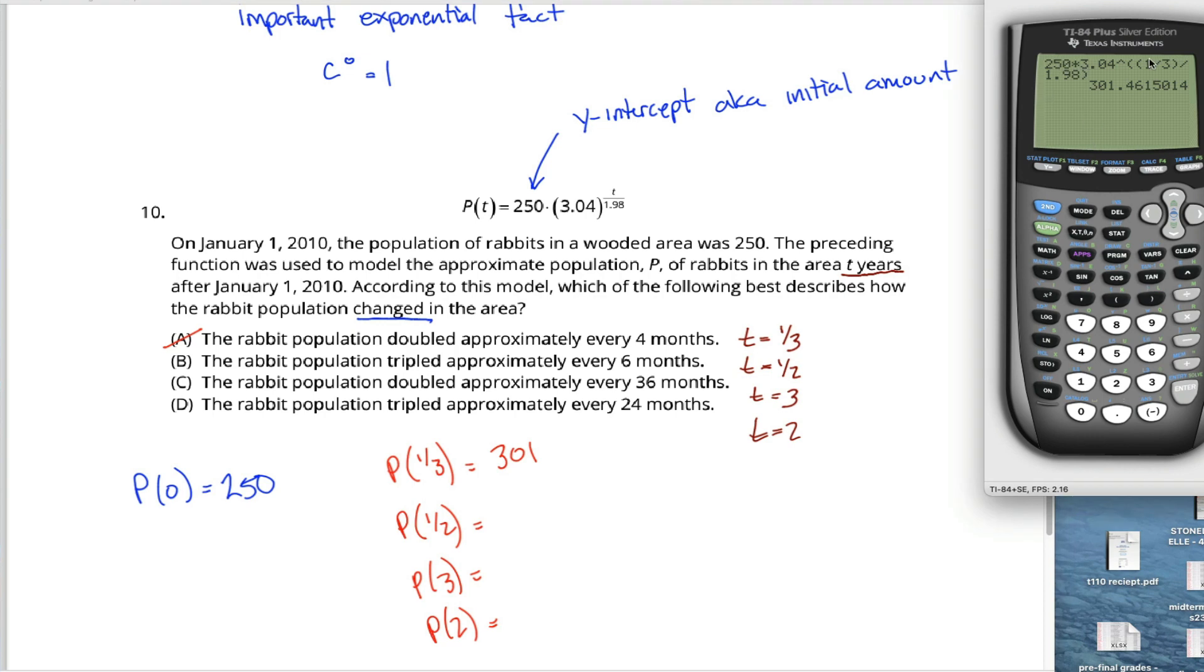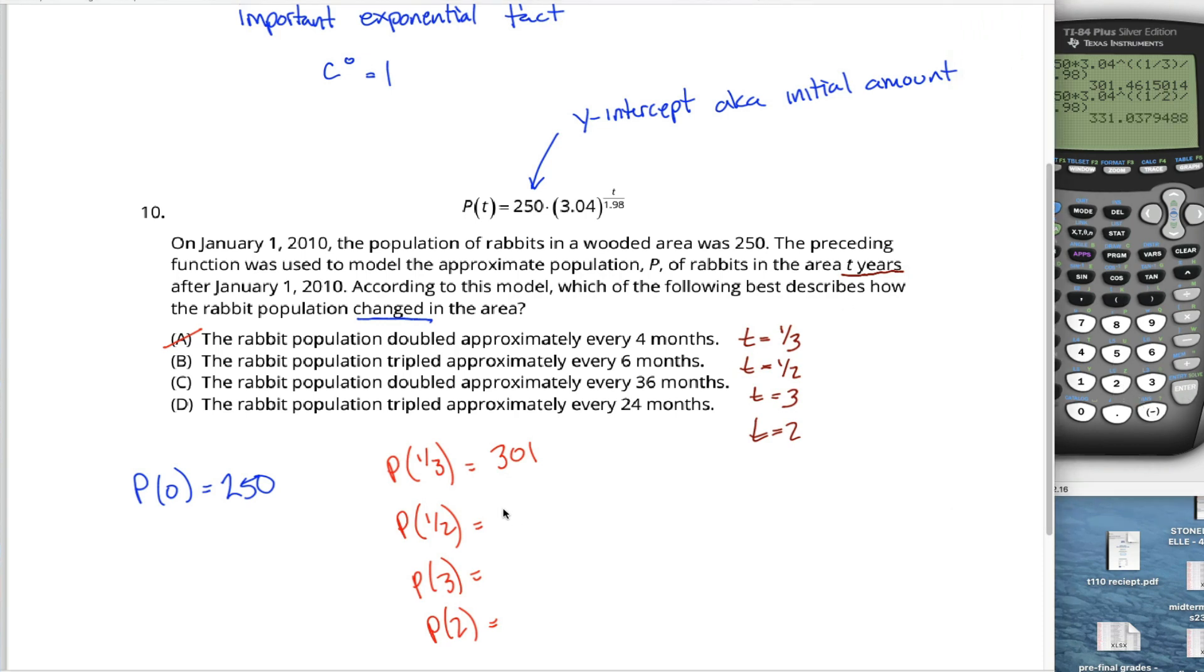You could then go back into your calculator, and rather than copy this entire expression again, if you hit second and then enter, it pulls up the most recent entry, and then you can just go up and edit it. Instead of one-third, I want a one-half in this position. So I'll put a T there, hit enter, and it spits out 331. 331, is that triple 250? No, triple 250 would be like 750. This is certainly not the right answer either.